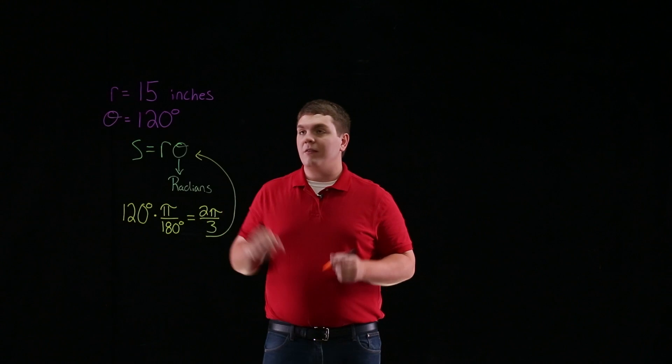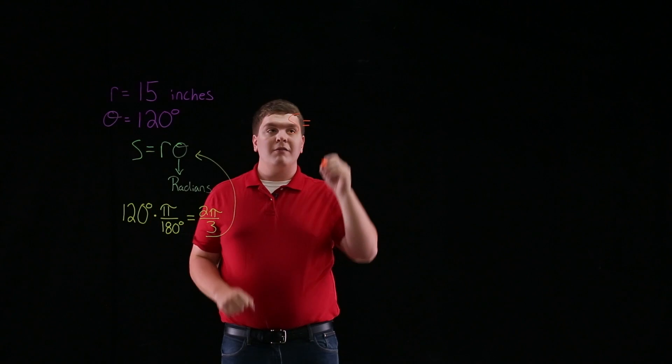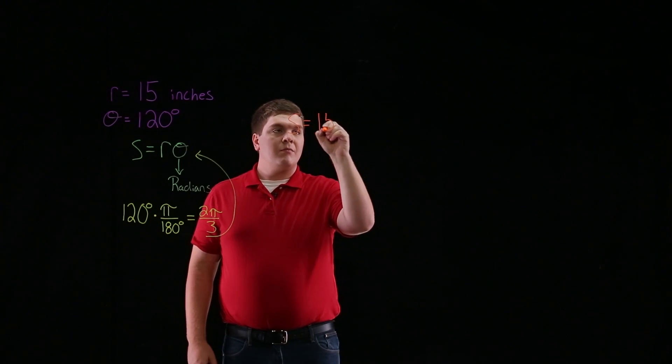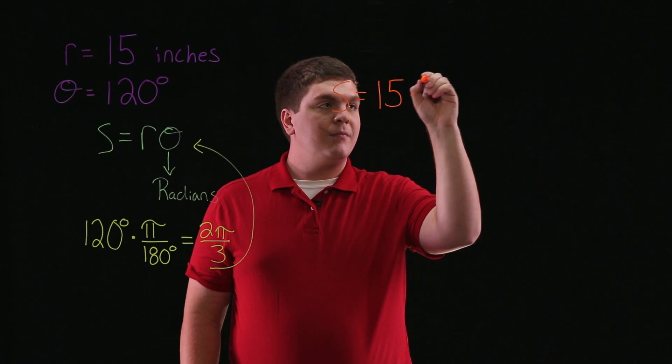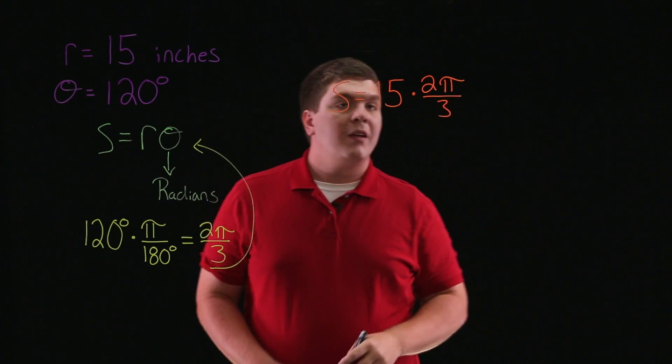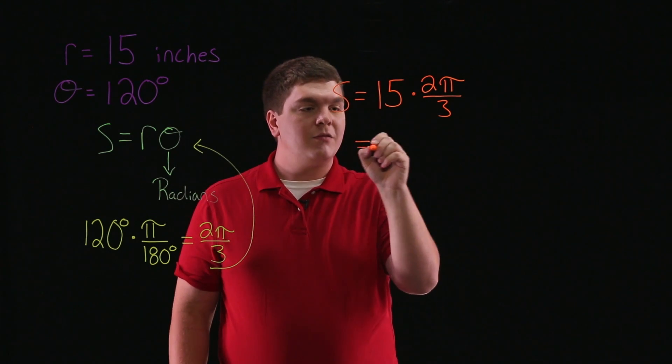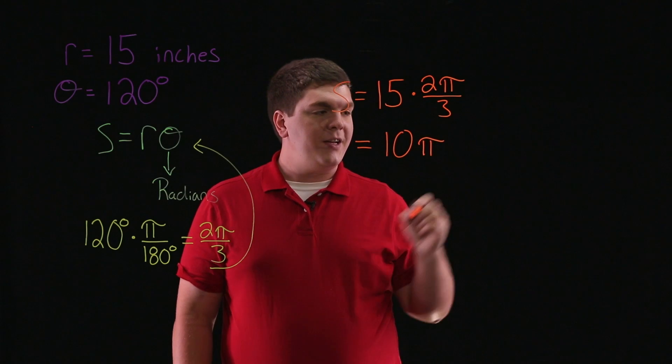So we have S, our arc length, is equal to our radius, 15 inches, times 2 pi divided by 3. And this is equal to 10 pi inches.